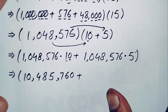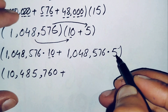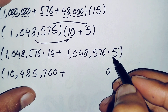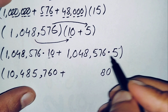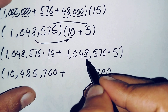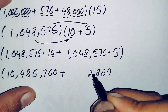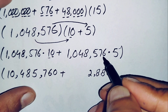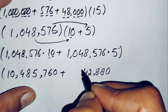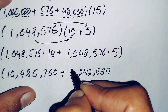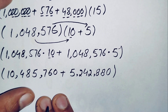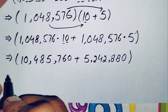Now multiplying 1,048,576 by 5: 5 times 6 is 30, carry 3; 5 times 7 is 35 plus 3 is 38, carry 3; 5 times 5 is 25 plus 3 is 28, carry 2; 5 times 8 is 40 plus 2 is 42, carry 4; 5 times 4 is 20 plus 4 is 24, carry 2; 5 times 0 is 0 plus 2 is 2; 5 times 1 is 5. This gives 5,242,880.